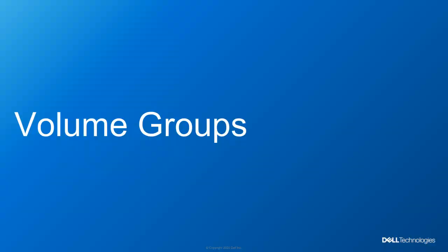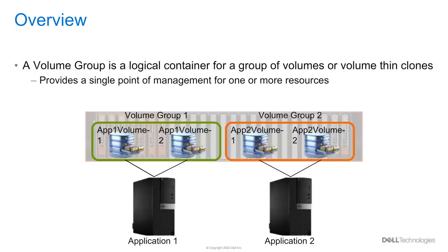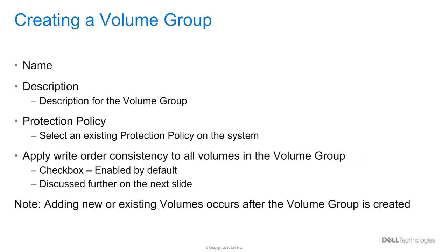Now let's talk about volume groups. A volume group is a logical container with multiple volumes or volume thin clones. The reason why an administrator would use a volume group is to have a single management point for managing different volumes at the same time. When creating a volume group, only a name is required; the volumes will be added after it is created. The volumes contained in a volume group are called members, which can be found under the properties of the volume group. Setting a protection policy is also available during creation. The last option is to apply write order consistency to all volumes in the volume group.